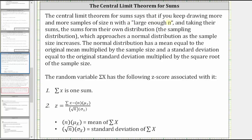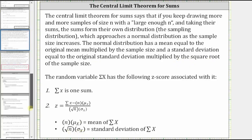The central limit theorem for sums says if you keep drawing more and more samples of size n, with a large enough n and taking their sums, the sums form their own distribution — the sampling distribution — which approaches a normal distribution as the sample size increases. The normal distribution has a mean equal to the original mean multiplied by the sample size, indicated by n times mu sub x, and the standard deviation is equal to the original standard deviation multiplied by the square root of the sample size, indicated by the square root of n times sigma sub x.